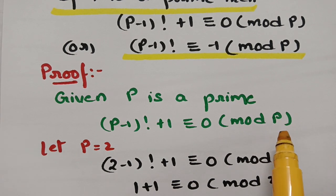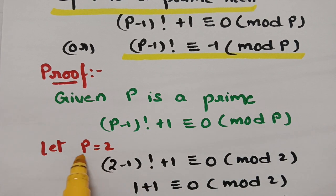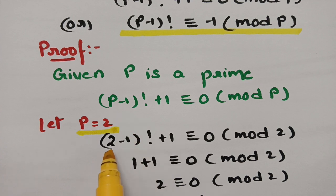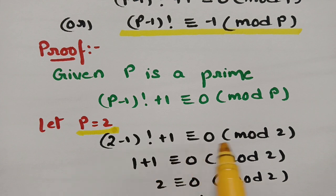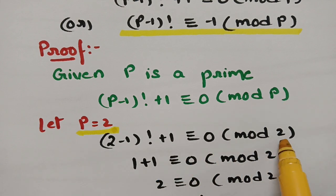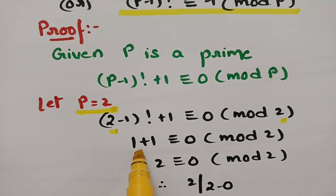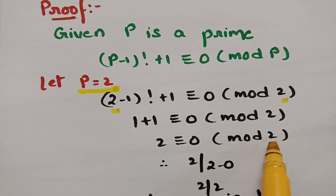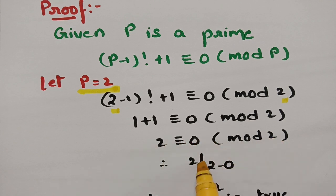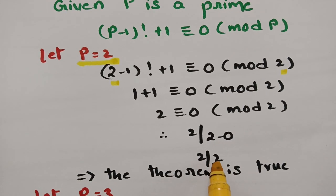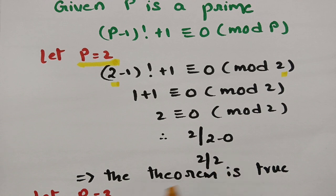Since 2 is the minimum prime number, I will check with p = 2. Substituting, we get (2−1)! + 1 ≡ 0 (mod 2), which is 1! + 1 = 1 + 1 = 2 ≡ 0 (mod 2). By the congruence definition, 2 must divide 2 − 0 = 2. Clearly 2 divides 2, so the theorem is true for p = 2.